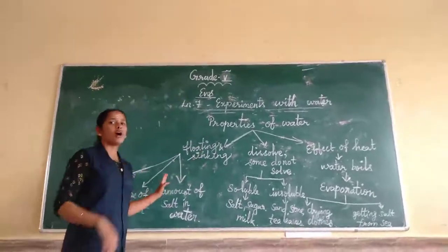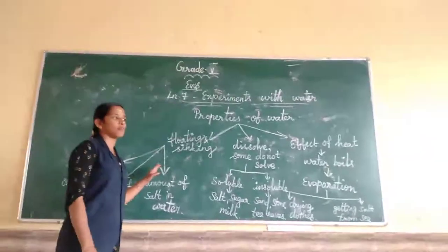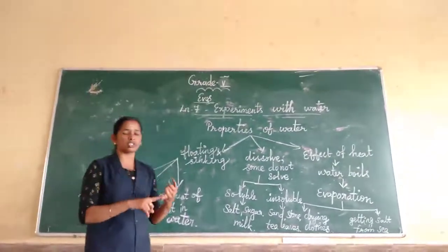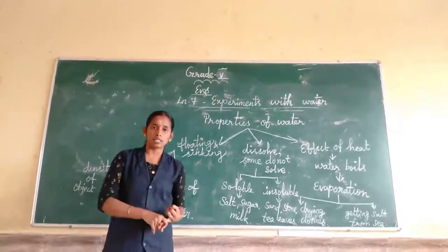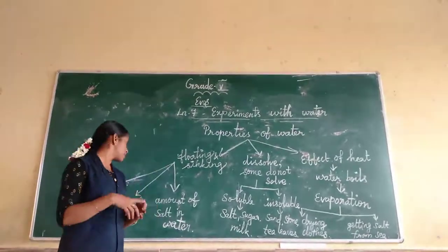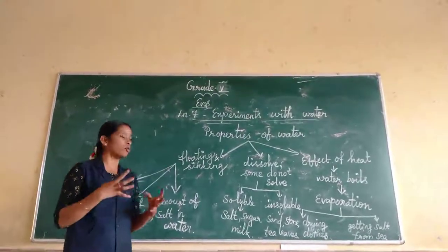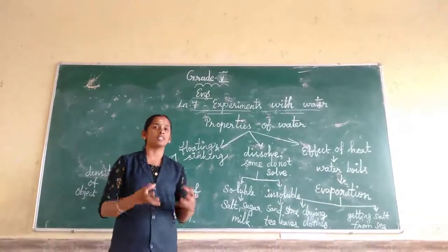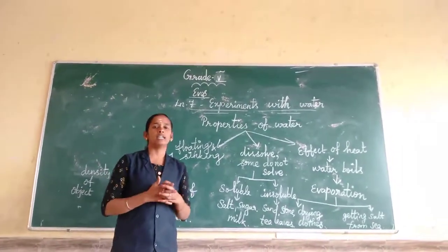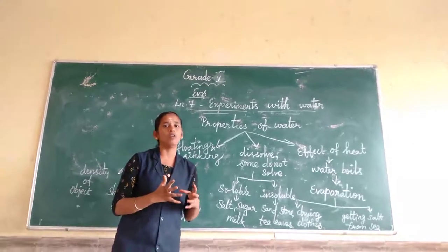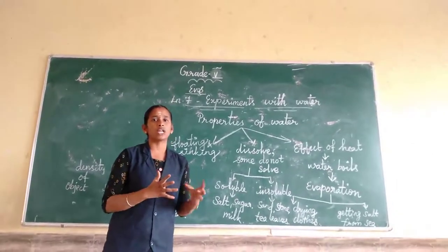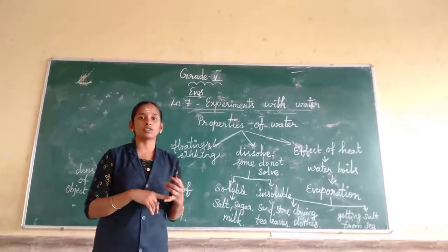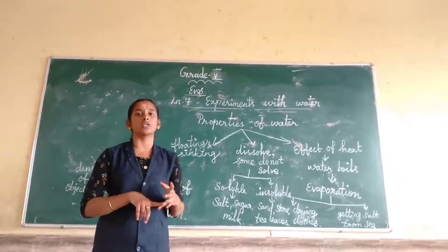The first property is floating and sinking — how does it happen? It depends on the shape of the object, the density of the object, and its capacity. Whether something floats or sinks in water depends on these factors. Friends, you can understand what things are soluble and what things are insoluble.